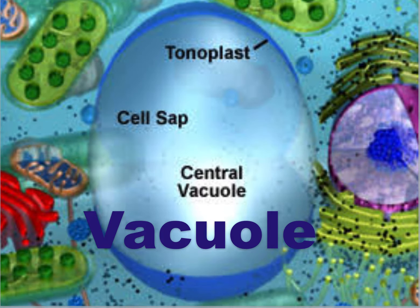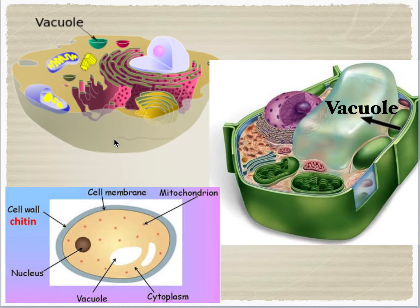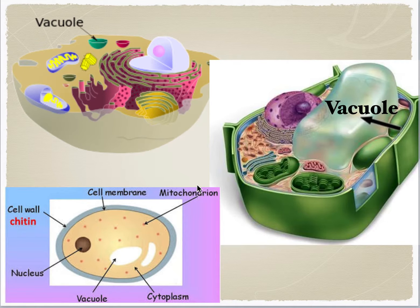It has a single membrane which is called the tonoplast. As you can see in these pictures, all the cells contain vacuoles, but the vacuole is quite bigger in the case of plant cells, and fungal cells also have a vacuole. However, there is a huge difference in size among all of them.